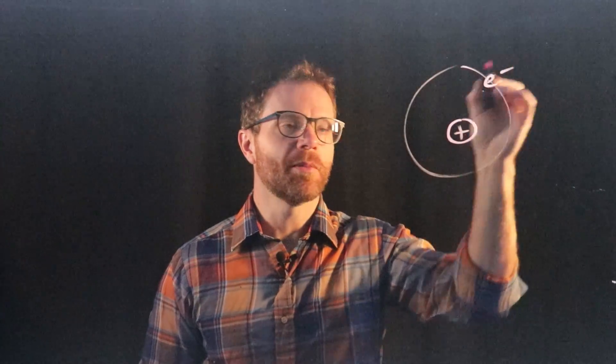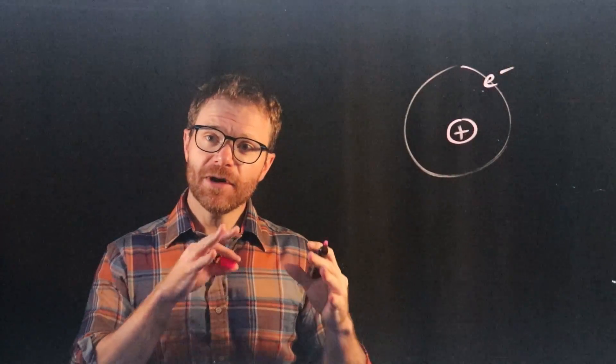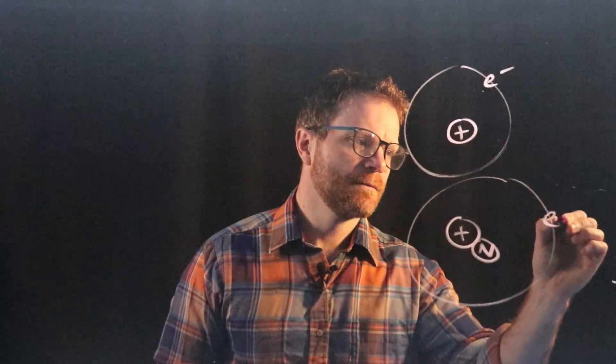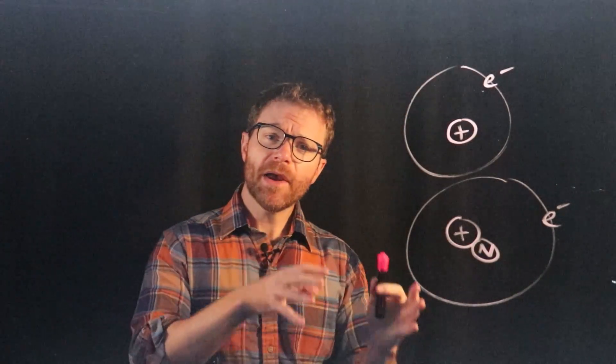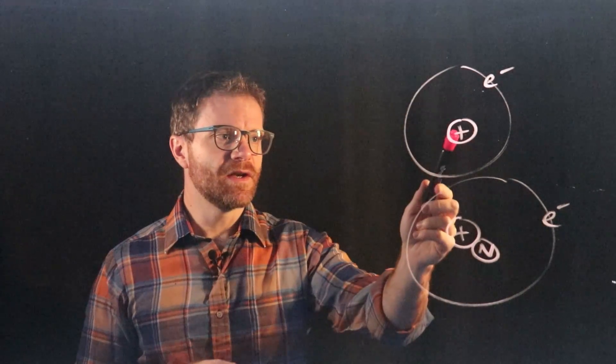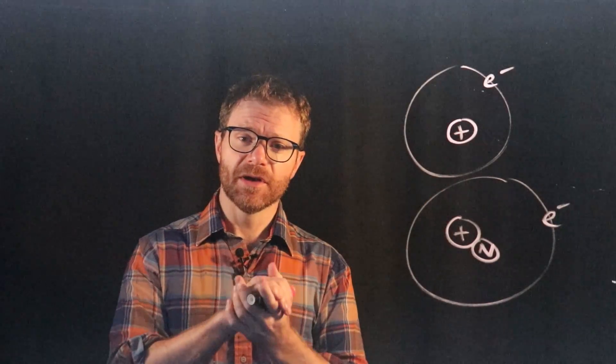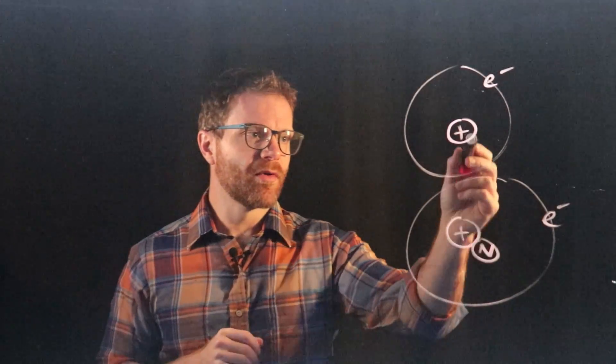There's one more thing that I want to talk to you about before we review atoms, and that is isotopes. Now, as I stated earlier, a hydrogen atom is just a proton with an electron orbiting it. But every now and then, there might be a proton and a neutron with an electron orbiting it. Now, you may recall that what I said earlier is it's the number of protons that determine an element. It's not the number of neutrons.